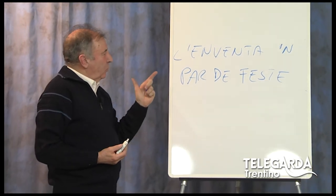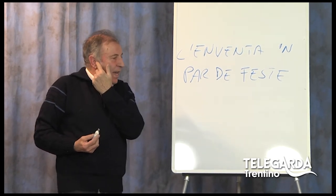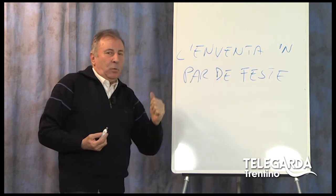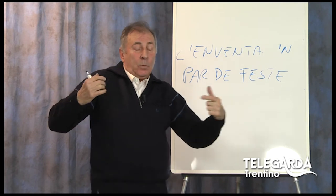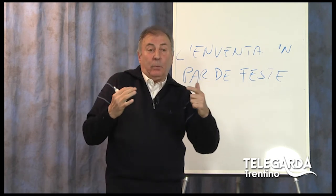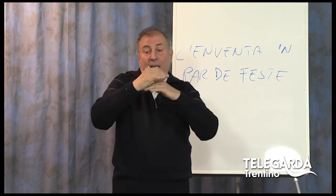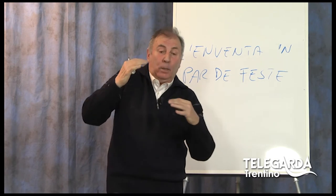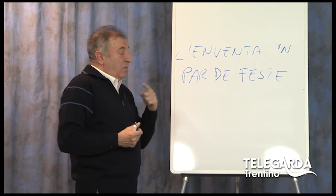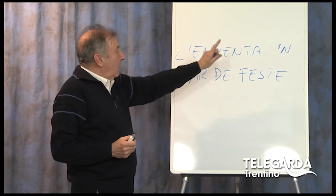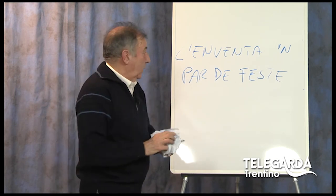Voi capite — forse adesso no, ma quando incontreremo le poesie, vedrete che a volte nei versi togliere una vocale vuol dire diminuire la lunghezza del verso. Bisogna saper calibrare bene questi apostrofi perché a volte le poesie devono avere una lunghezza di versi uguale l'uno con l'altro. Togliere o aggiungere una vocale può causare dei problemi. A volte alcuni scrittori purtroppo sbagliano quest'uso dell'apostrofo.